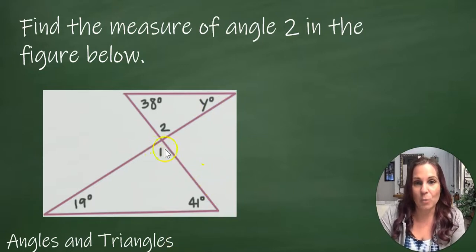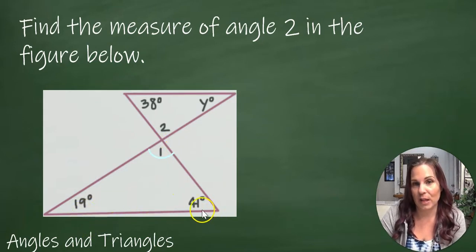So let me look at the other triangle. I've got angle 1, then I've got a 19 degree angle and a 41 degree angle.